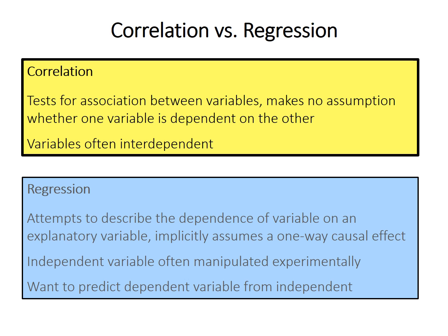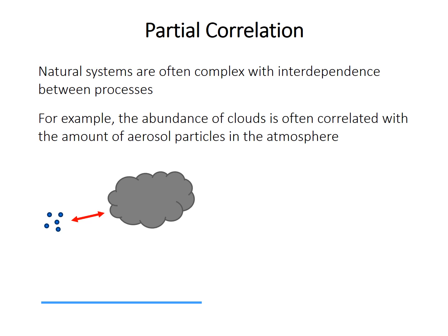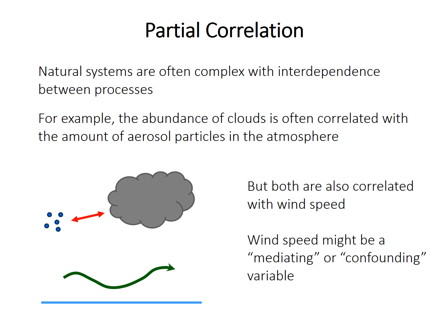As you'll see from this video, partial correlation does kind of blur the lines between strict association and strict causality because of something called confounding variables. Partial correlation is often quite useful because natural systems can have a lot of interacting or interdependent processes. For example, the abundance of clouds over the ocean is often correlated with the amount of tiny particles called aerosols — when there are a lot of aerosols, there are also a lot of clouds, and vice versa. But both aerosols and clouds can be correlated with wind speed, so wind speed could be a mediating or confounding variable. Perhaps some or all of the correlation between aerosols and clouds occurs because both are actually correlated with wind speed. So what we'd really want to know is the strength of correlation between aerosols and clouds after accounting for the fact that wind speed might affect both of them.